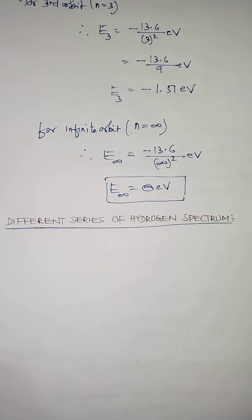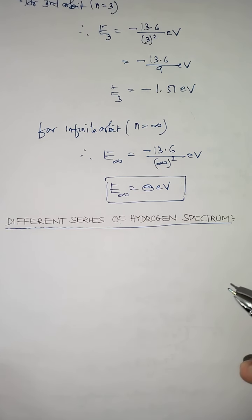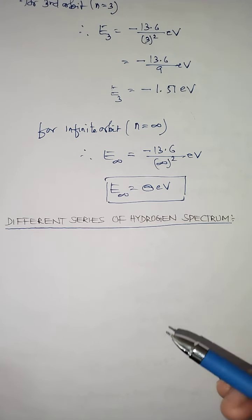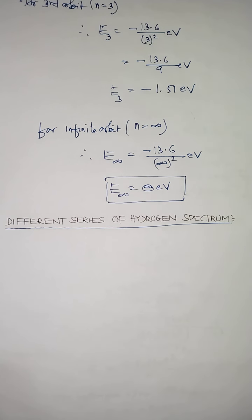The spectrum means the color band having different wavelengths and different frequencies. Now this spectrum of hydrogen can be produced when the electron jumps from any of the higher orbits to any of the lower orbits, because the electron in the hydrogen atom in the excited state can be in any of the orbits.